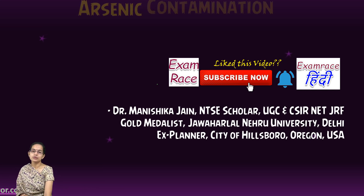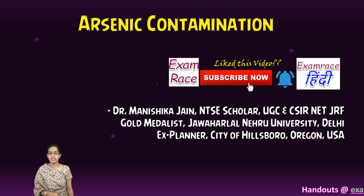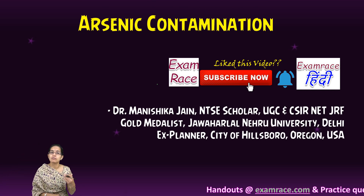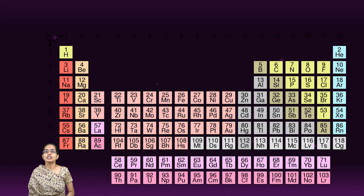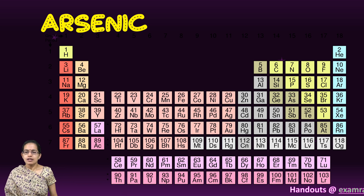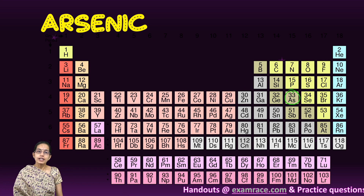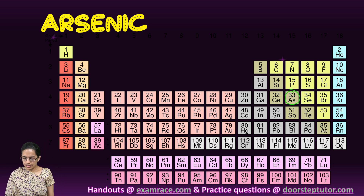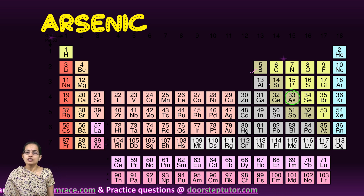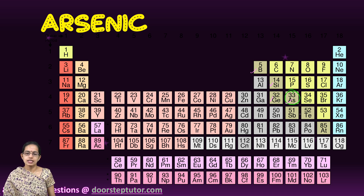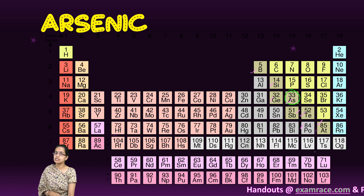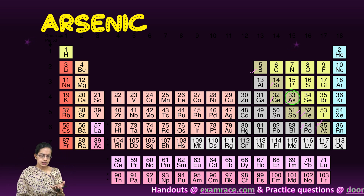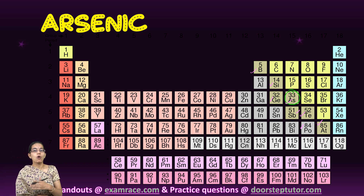We will be talking about one of the most important topics — arsenic contamination. Before we begin understanding the contamination caused by arsenic, let's understand what arsenic is and where it is present. If we look at the periodic table, arsenic is found at atomic number 33. Boron, silicon, germanium, arsenic, antimony, tellurium, astatine, and polonium are all considered metalloids — meaning they are intermediate between a metal and a non-metal.